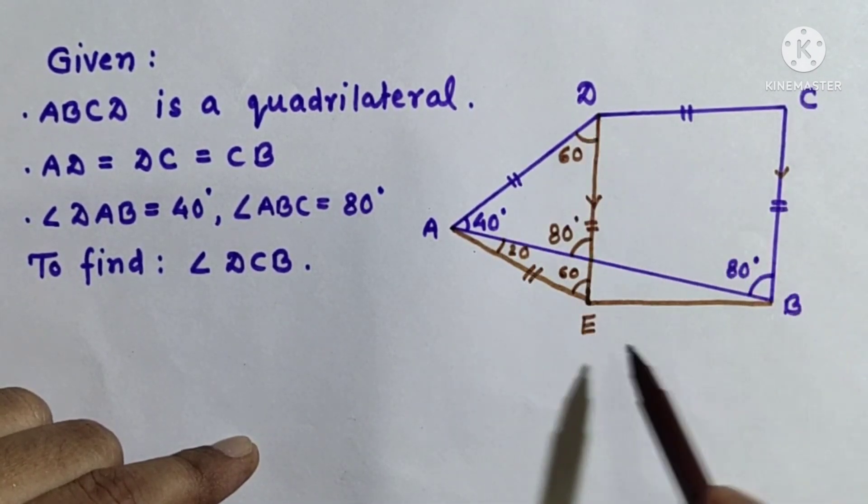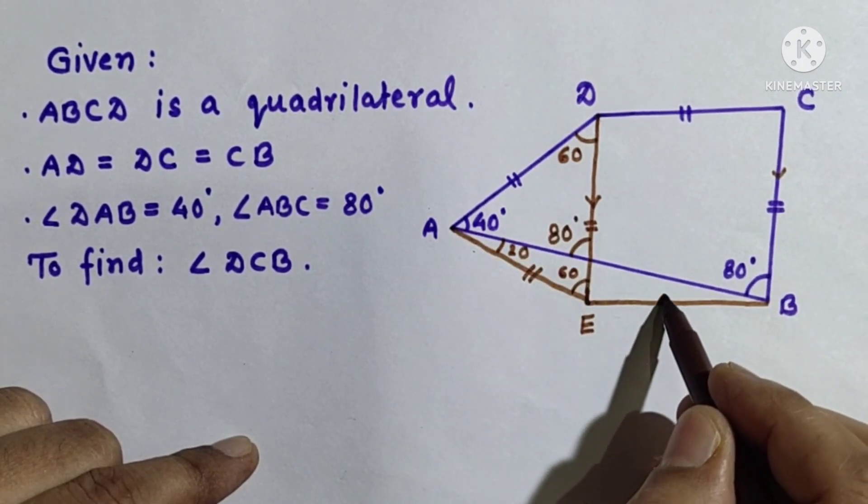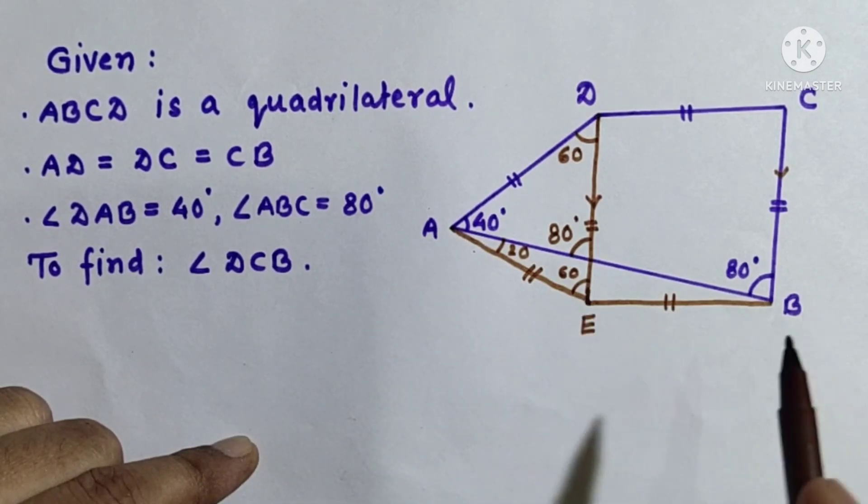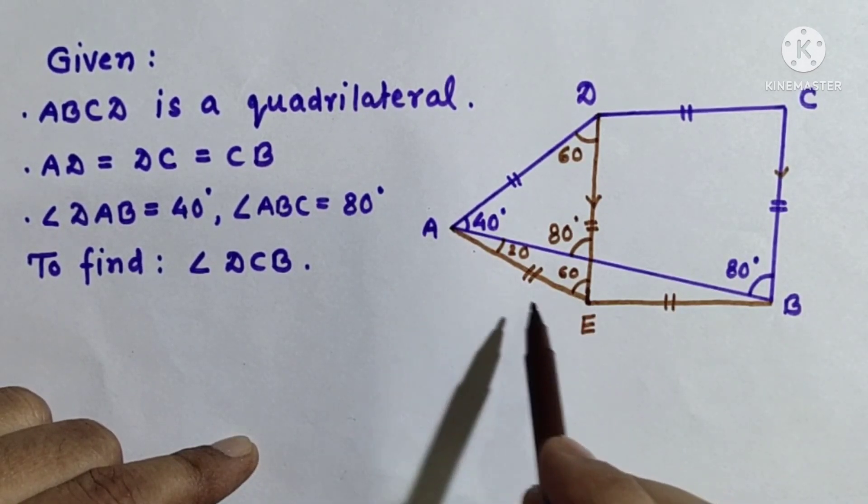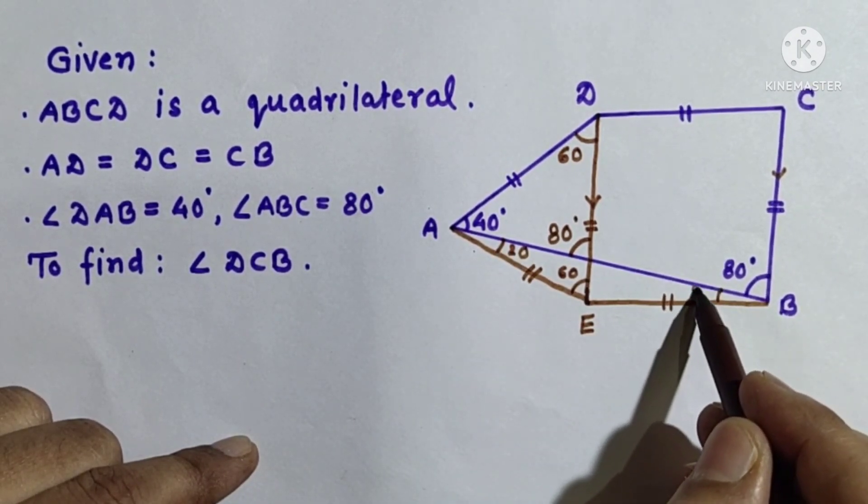Because this is an equilateral triangle all the three sides are equal. Since DCBE is a parallelogram, opposite sides will also be equal. So AE and EB are equal, and we got angle BAE as 20 degree, so this will also be 20 degree.